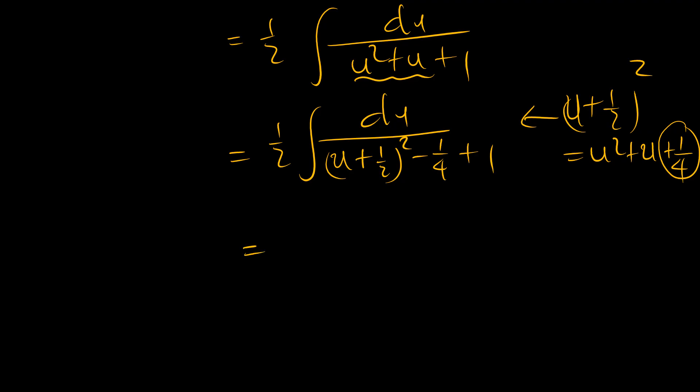And so, this becomes a half du over u plus a half squared plus this and that interact, and we get three quarters. Okay. Now, we do have a very solvable problem here.